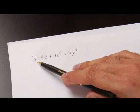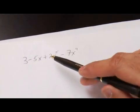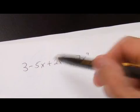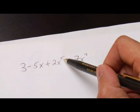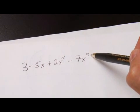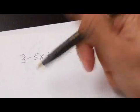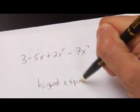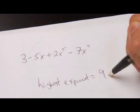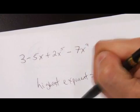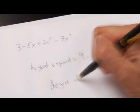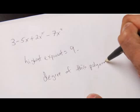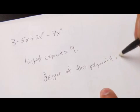We're able to see here that in this polynomial we have 3 minus 5x plus 2x to the power of 5 minus 7x to the power of 9. We see here we have two exponents: one exponent which is to the power of 5 and another exponent which is to the power of 9. The highest exponent equals 9, so the degree of this polynomial is 9.